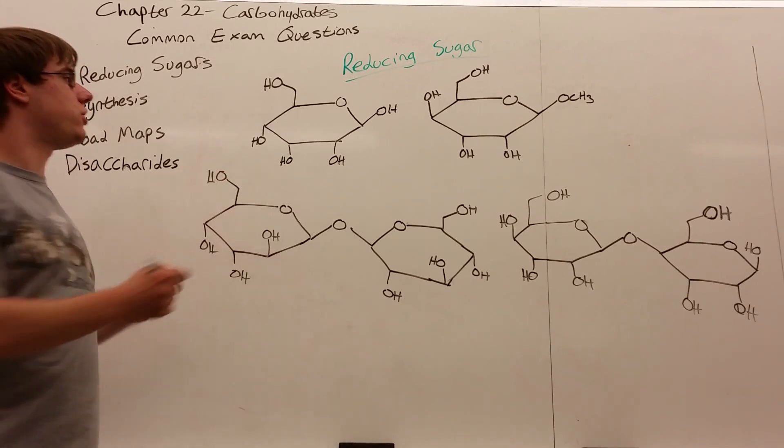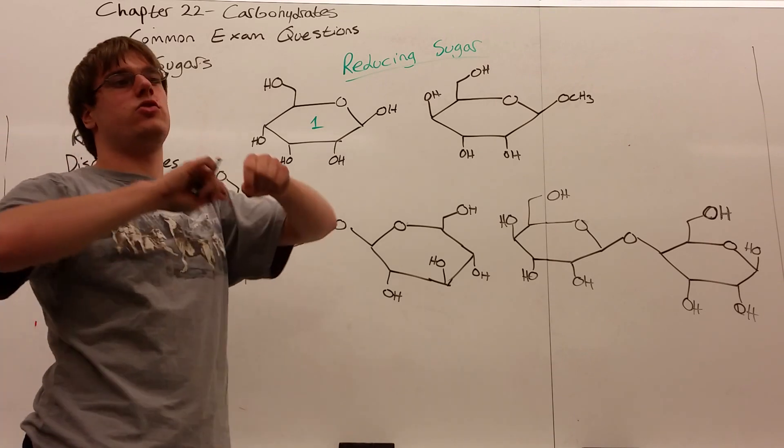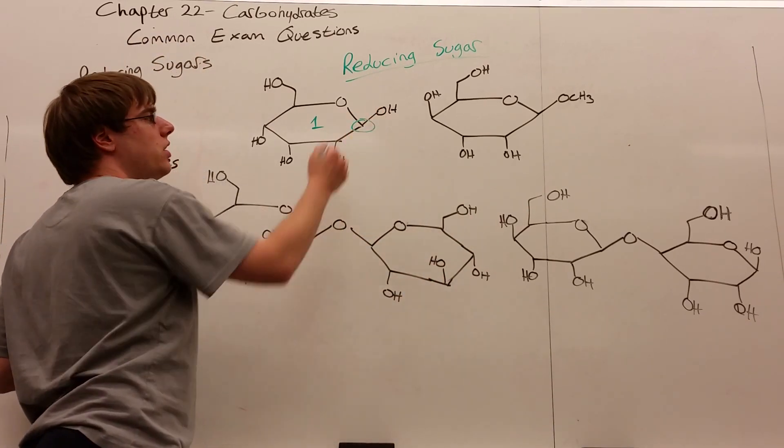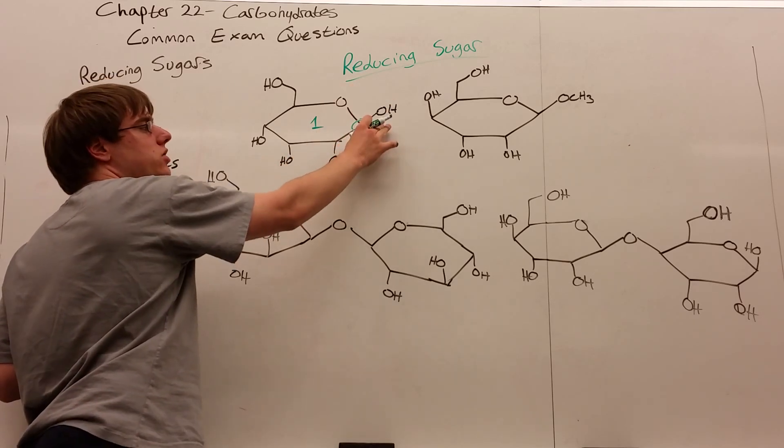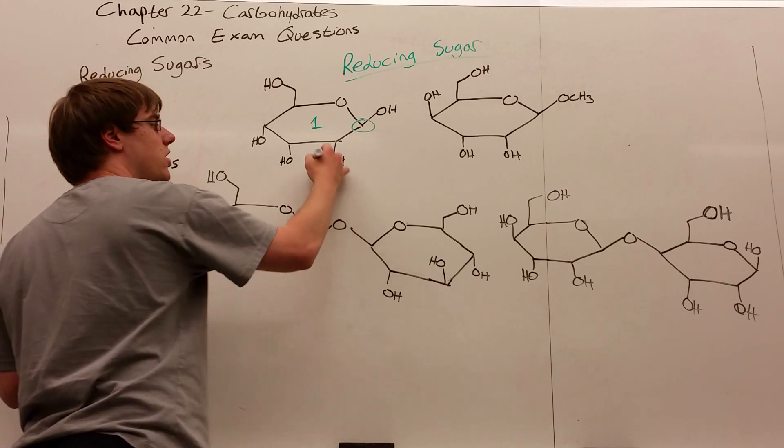So if we look at this first structure, structure one, first find your anomeric carbon, the carbon that shares two oxygen bonds, which is this carbon right there, because we've got one, two. This carbon has its anomeric OH, so is this reducing sugar? Yes.